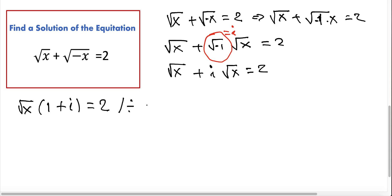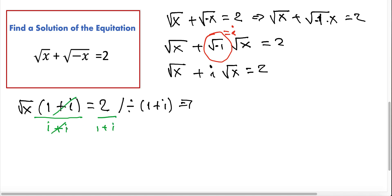Now we can divide everything by (1 + i). Dividing both sides by (1 + i), we simplify and obtain: square root of x equals 2 divided by (1 + i).